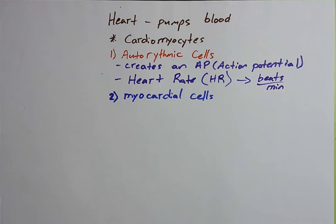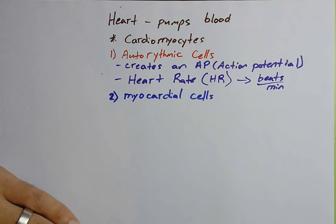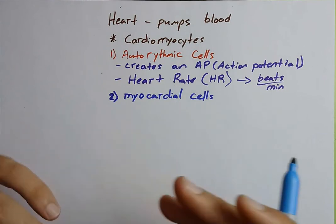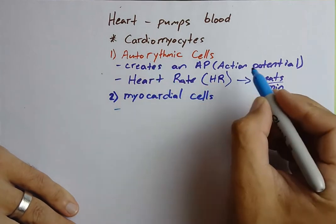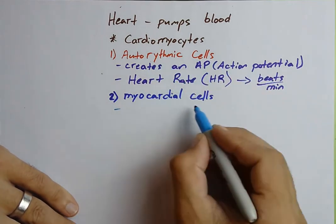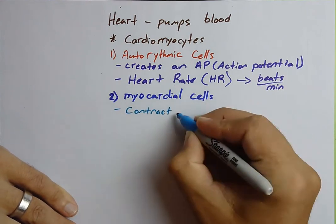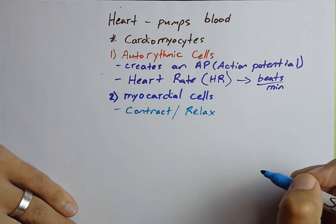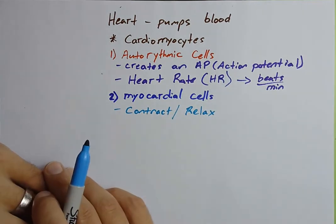Cardiomyocytes — the myocardial cells — are the ones that actually contract and relax. They have the sarcomeres, troponin, tropomyosin, actin, myosin, and cross-bridge interactions, just like skeletal muscles did. So when the action potential from the auto-rhythmic cell reaches the myocardial cells, it's going to cause them to contract and relax. It's a pretty unique synergy between those two cells.